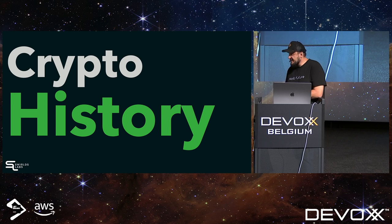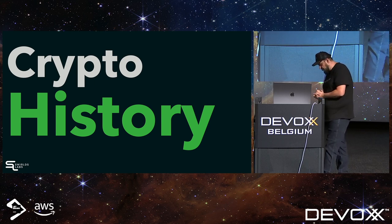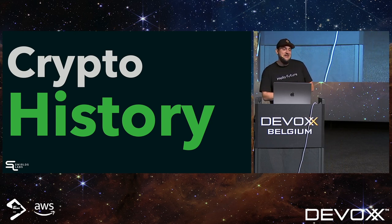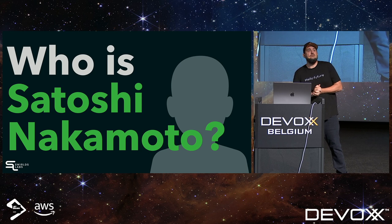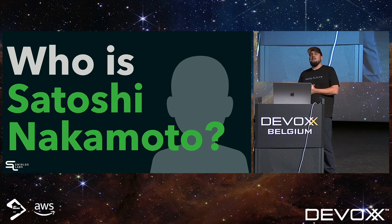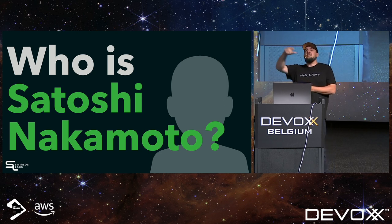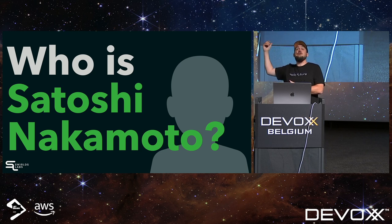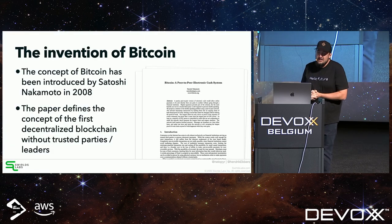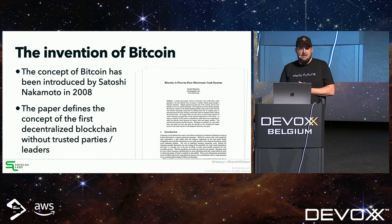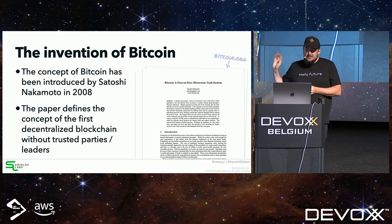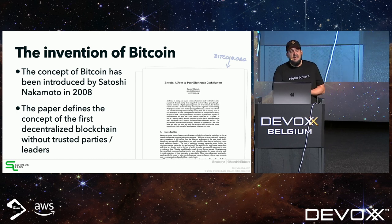Before talking about blockchain, let's do some crypto history. Satoshi Nakamoto — who knows who that is? Satoshi Nakamoto invented Bitcoin. He created a paper — a screenshot of the first page is here — published online at bitcoin.org. He created this paper in 2008. It's an open paper describing Bitcoin's technology and goals.